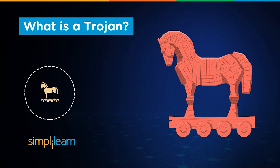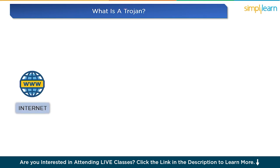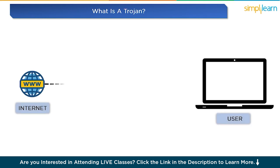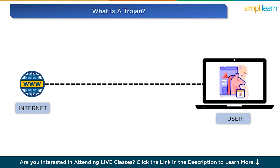Before we go any further, let's define what a Trojan is. A Trojan is a type of harmful software that pretends to be something useful or desirable, while actually being malicious. It's like a sneak imposter hiding inside something you want, like a fun game or a helpful app.